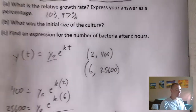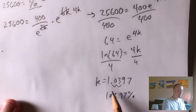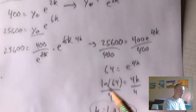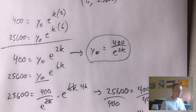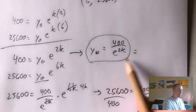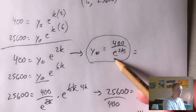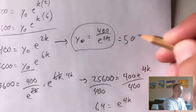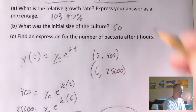Now we need to find the initial size of the culture. We found K equals 1.0397, so if we plug that back into what we had for Y sub zero — which is 400 over E to the 2K — plugging in gives us 400 over E to the 2 times 1.0397. If you plug that into a calculator, that just gives you 50. So the initial size of the culture is 50 bacteria.